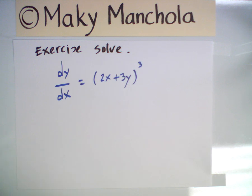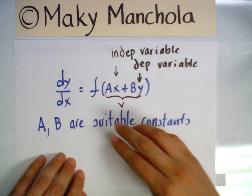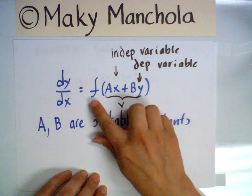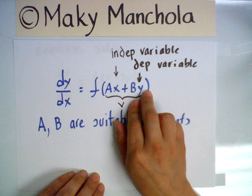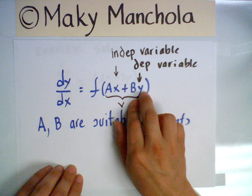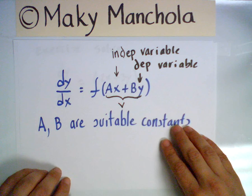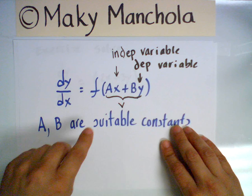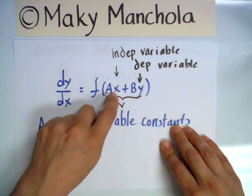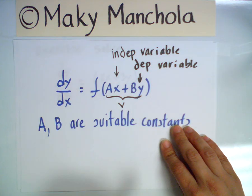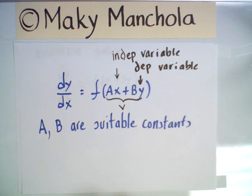This concludes our presentation of solving the differential equation dy/dx equals f(ax plus by), where a and b are suitable constants, x is the independent variable, and y is the dependent variable.